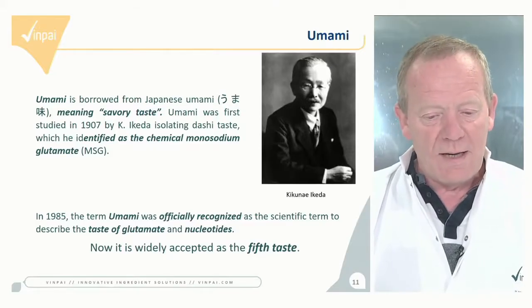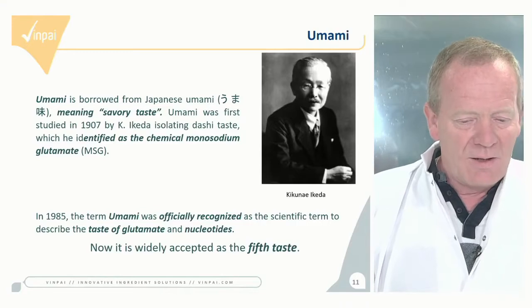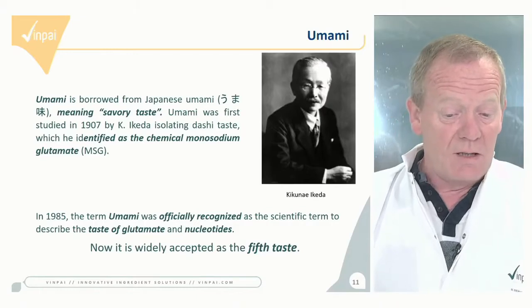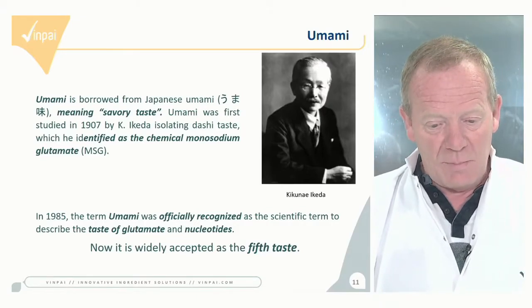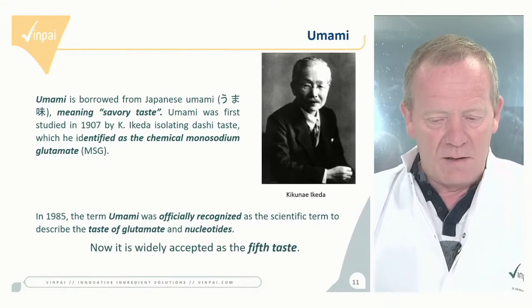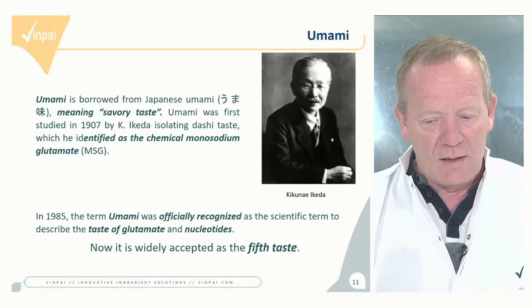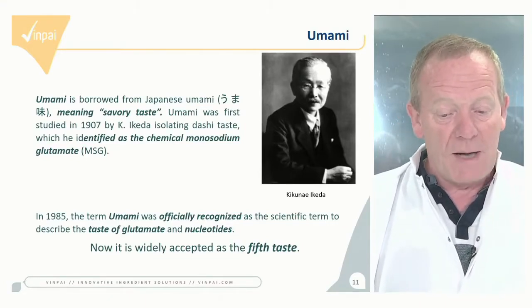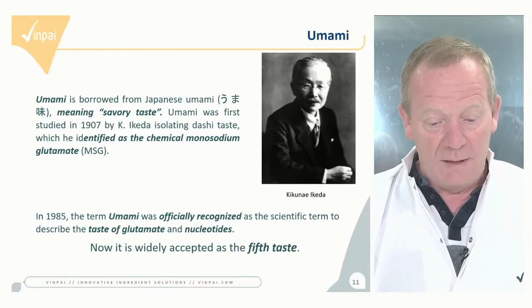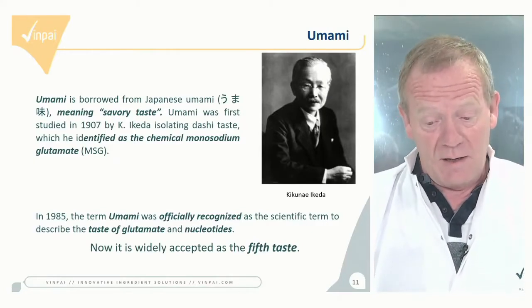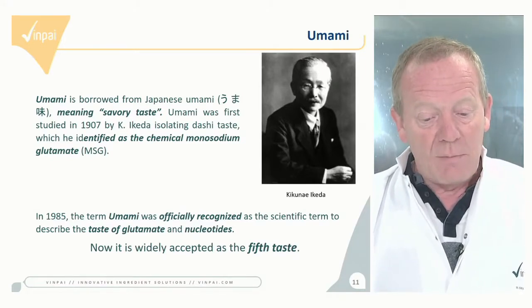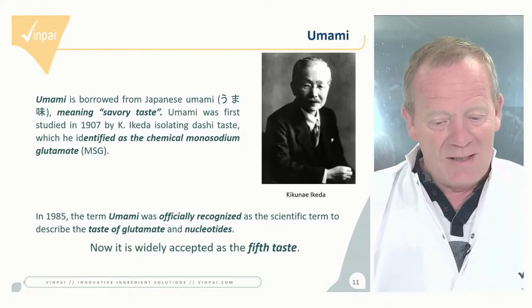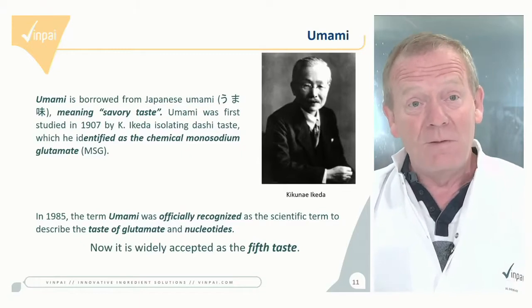Some people don't know umami as a taste because it is quite new. The name is borrowed from Japanese, meaning savory taste. It was first studied and discovered in 1907 by a Japanese researcher who isolated this taste and showed it came mainly from the presence of monosodium glutamate in umami-tasting food. It was officially recognized as a scientific term to describe the taste of glutamate and nucleotides only in 1985, but is now widely accepted scientifically as the fifth taste.